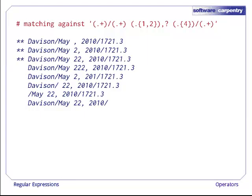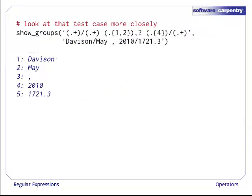Now, the second and third make sense. May 2nd is valid and May 22nd is valid, but why does May with no date at all match this pattern? Let's look at that test case more closely. The groups are Davison, that looks right. May, that's good so far. A comma on its own, which is clearly wrong, and then the right year and the right reading.